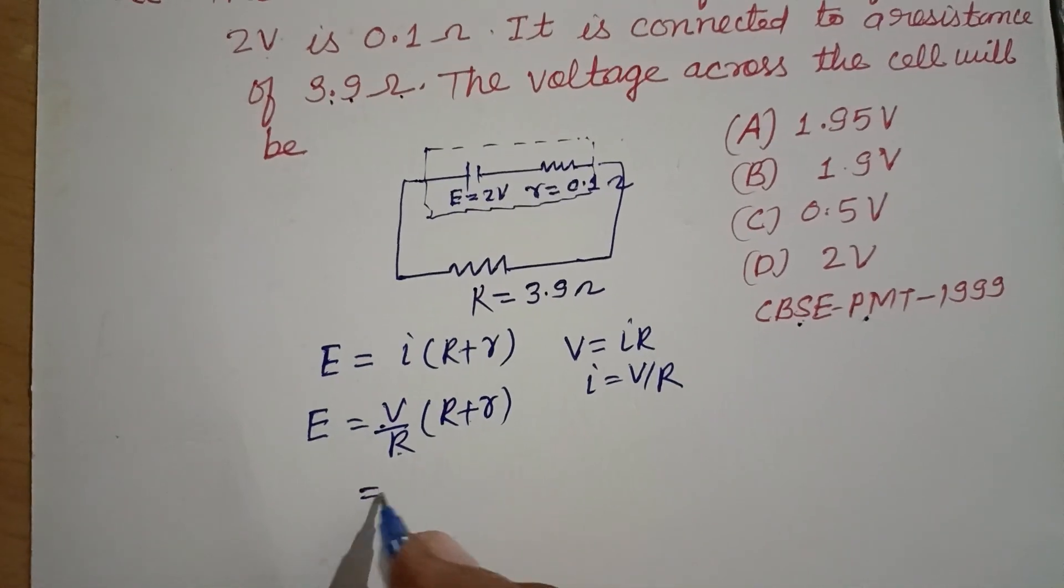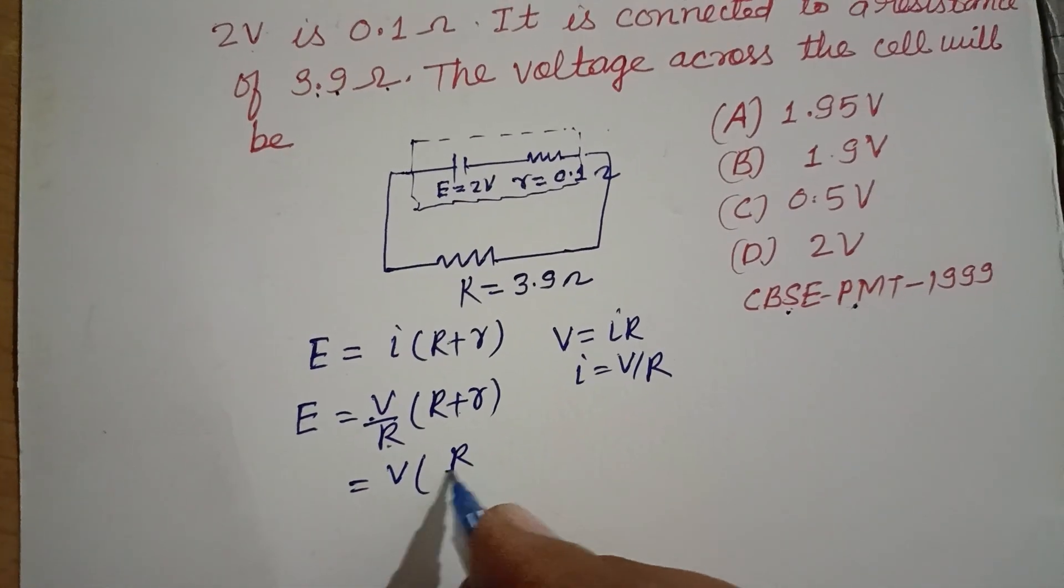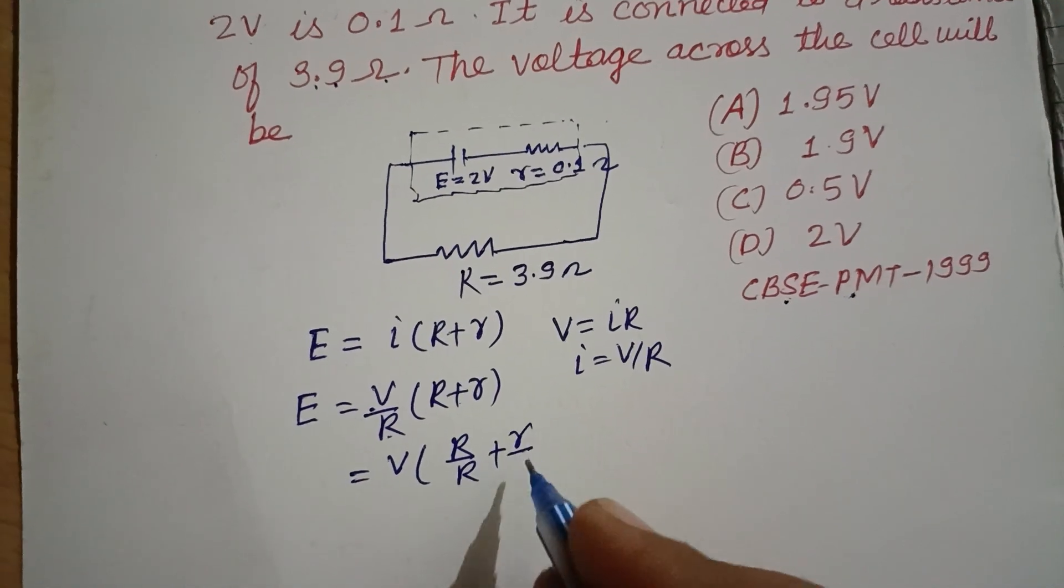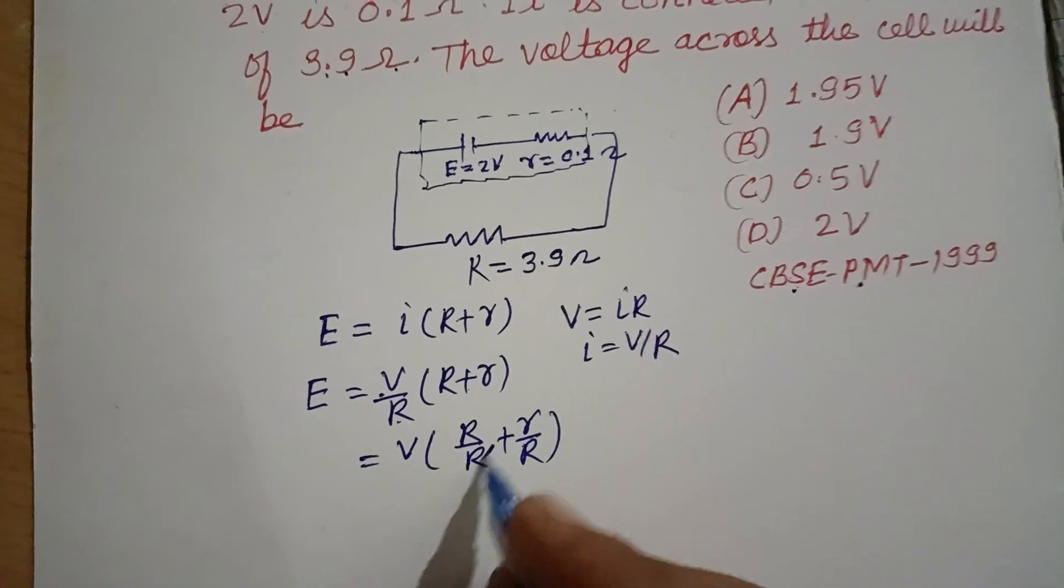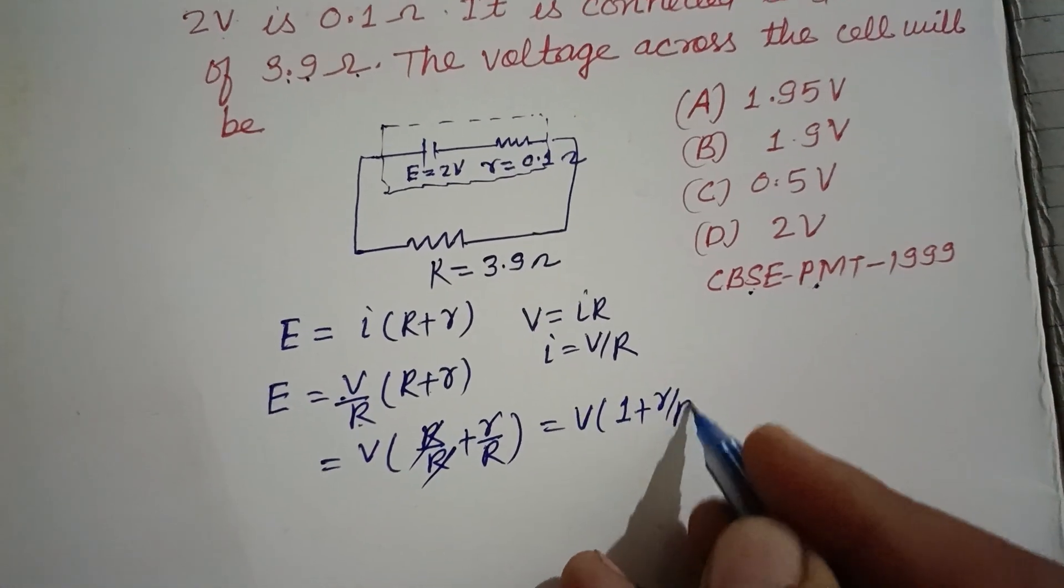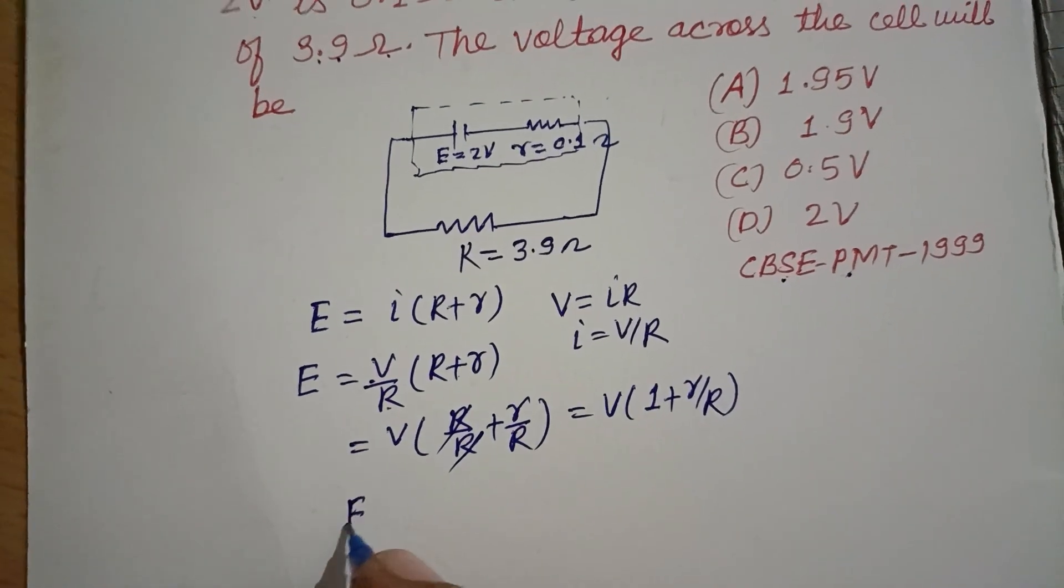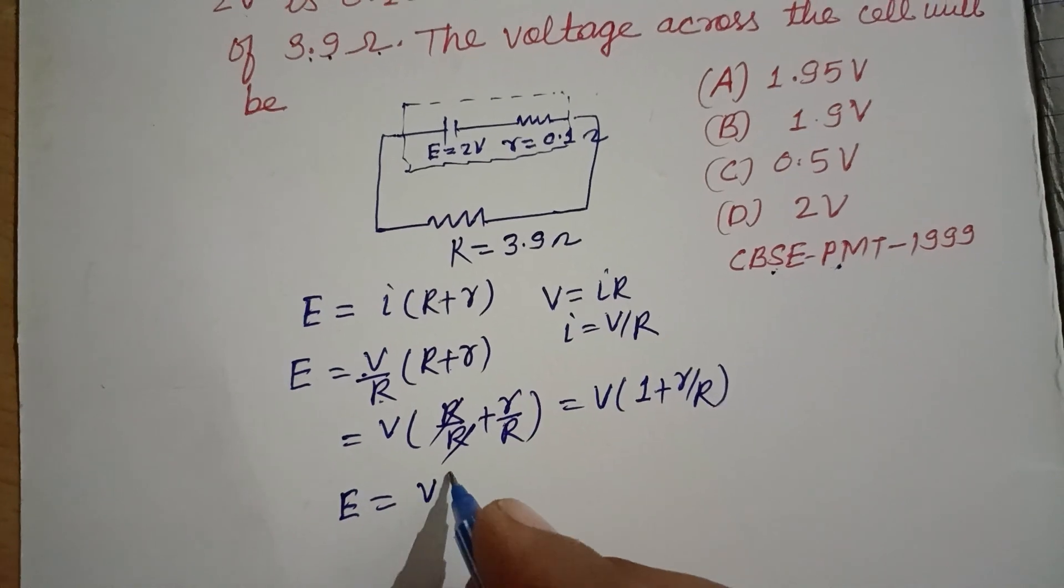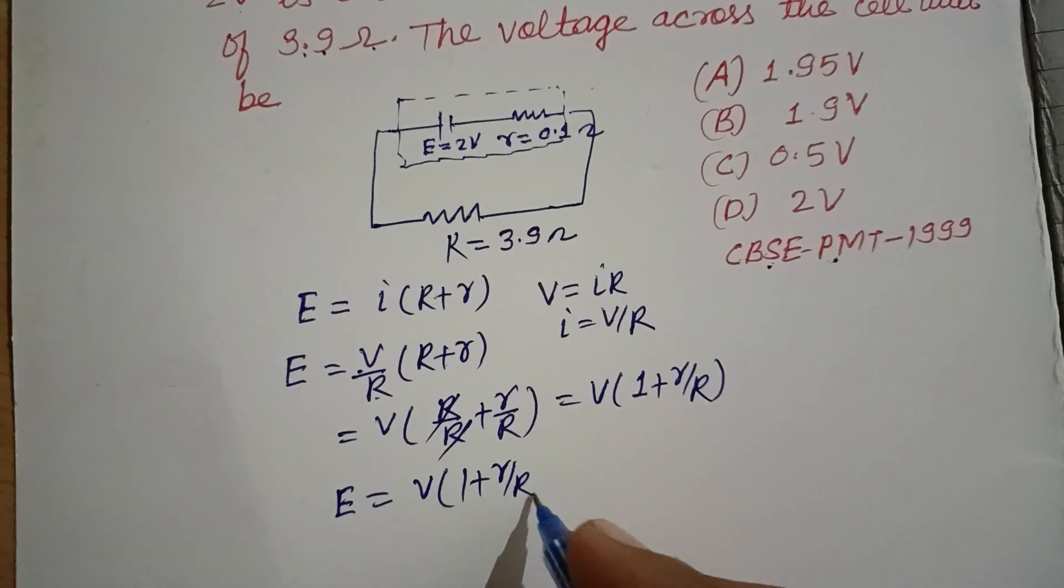Now taking this inside. So this is V upon R plus small r upon capital R. This is V into 1 plus r over R. So E equals V into 1 plus r over R.